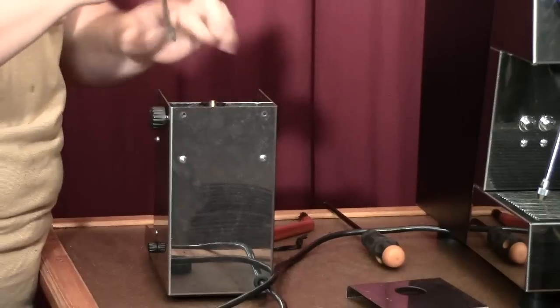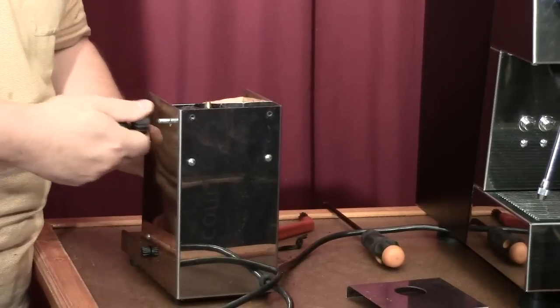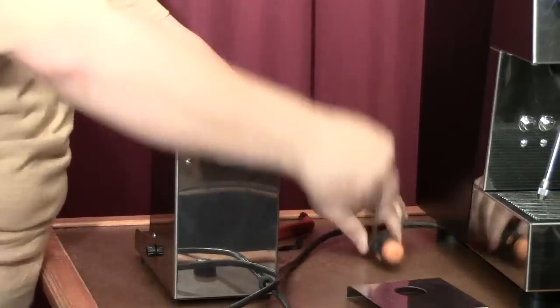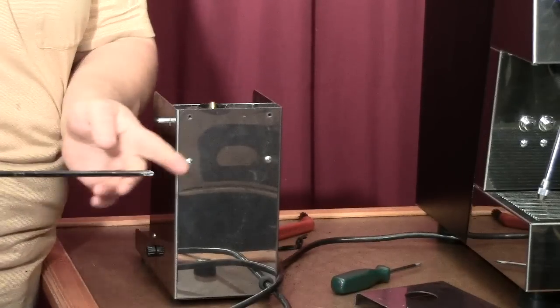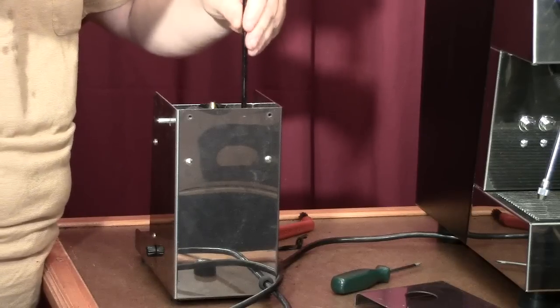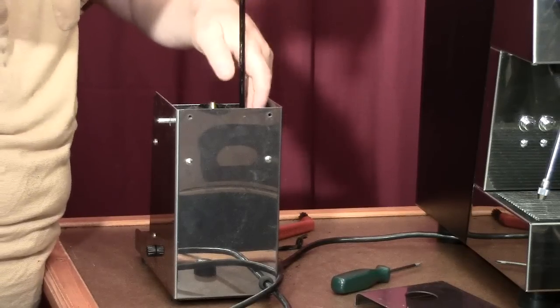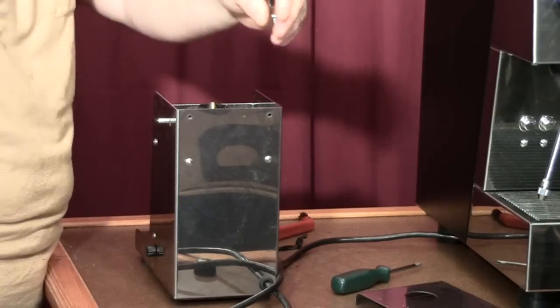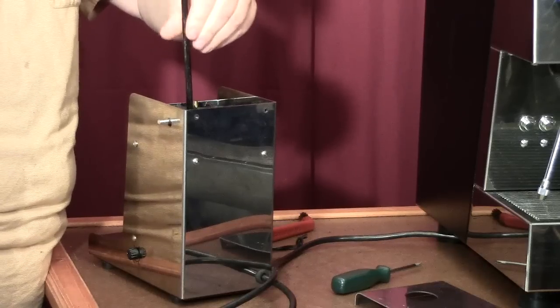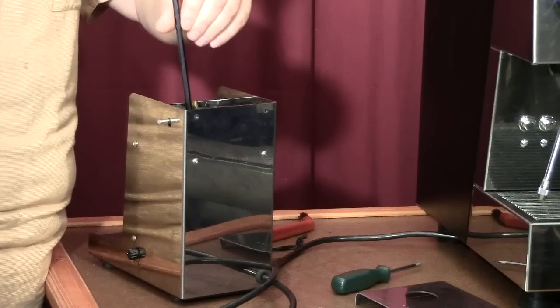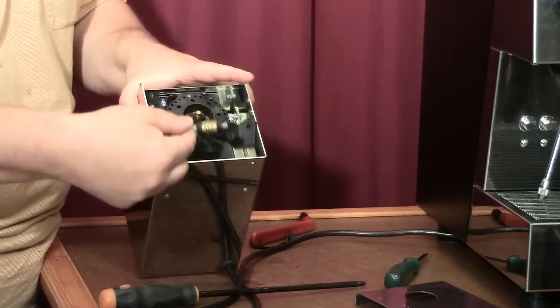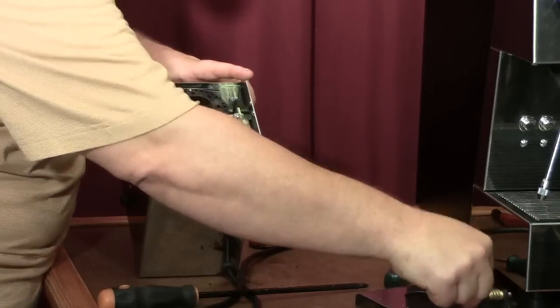Now we're removing the stepless section - pull the knob and remove these two screws. For this operation I like to use this screwdriver because there's a magnetic tip that helps me pull those screws out effortlessly. And then this comes right out - this is your stepless attachment.